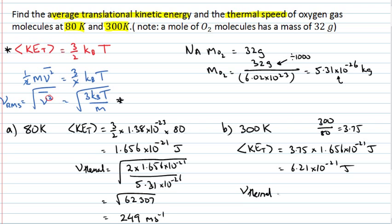That new thermal speed should be larger, because I've increased my temperature. However, the thermal speed goes as the square root of the temperature. So that means that my new thermal speed will be the square root of 3.75 multiplied by 249. So that's equal to 482 meters per second. You can go through and check these numbers independently by going back to the original equations, or you can just realize that my translational kinetic energy is just proportional to temperature, and my velocity is proportional to the square root of temperature.